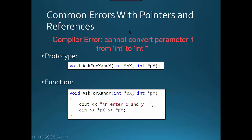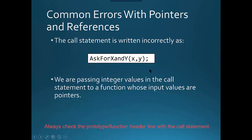One of the common errors with pointers and references involves a function prototype that takes a pointer. If you ever get the compile error 'cannot convert parameter 1 from int to int', it may occur when you call a function that takes a pointer and forget to put the ampersand operator.